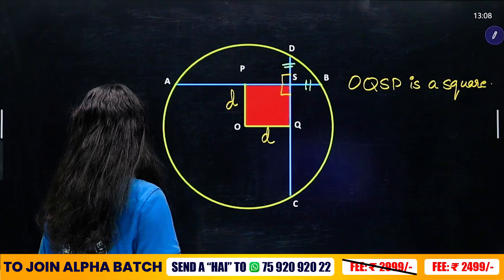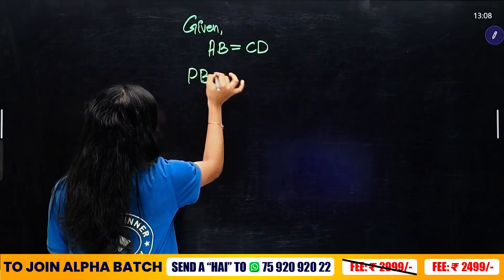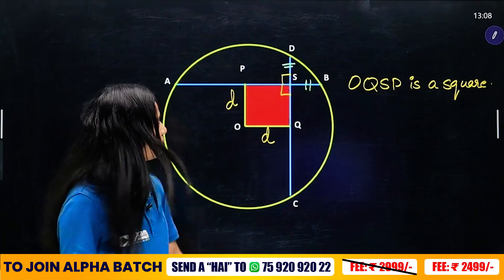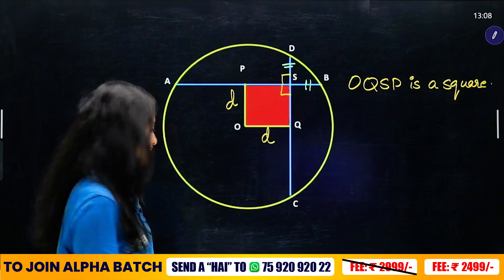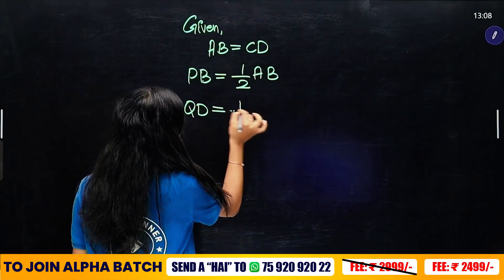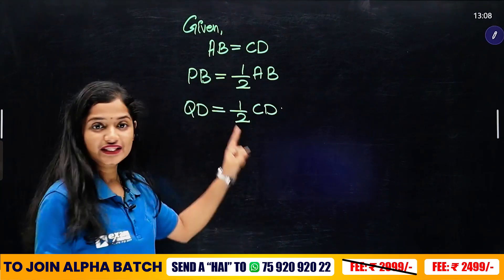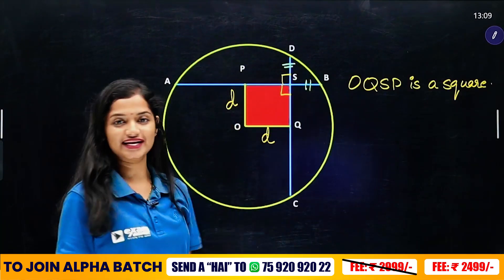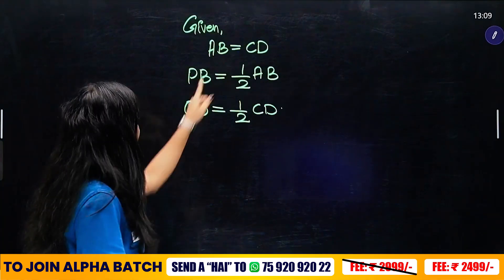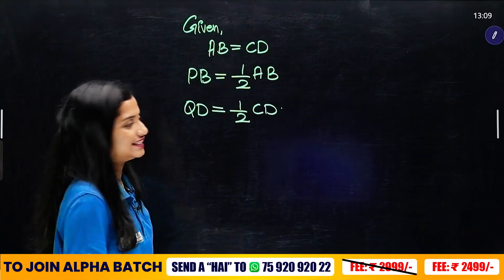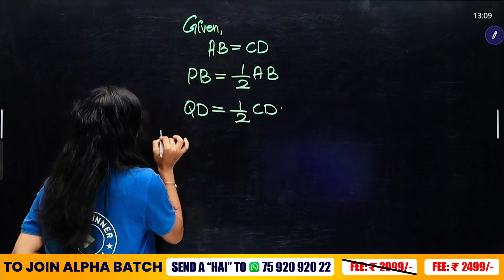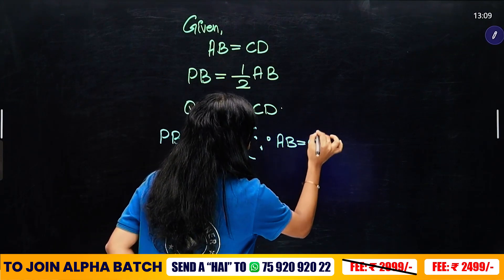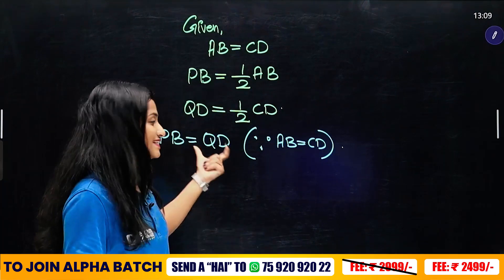AB is equal to CD. Since AB is equal to CD, PB equals QD. Since AB is equal to CD, AB and CD are equal, so PB is equal to QD.